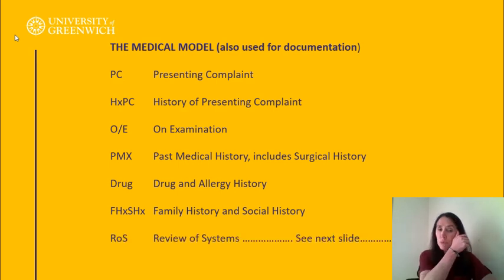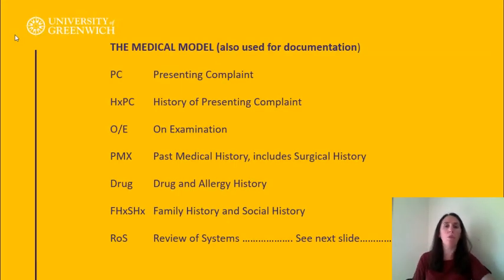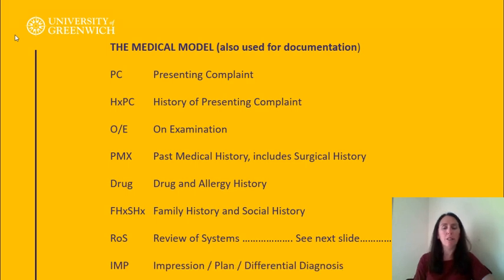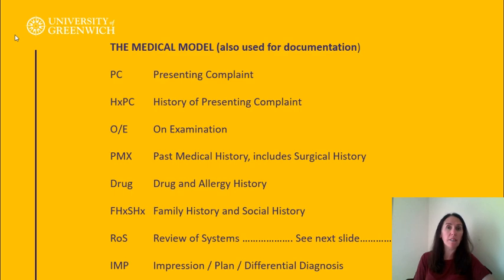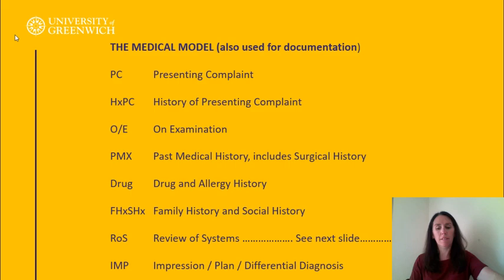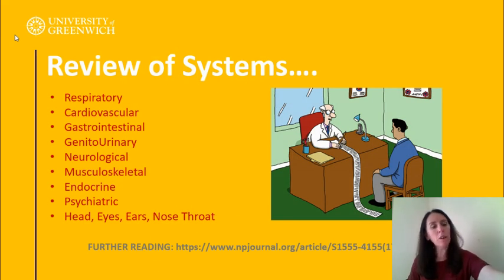Review of systems is basically code for everything else — this is what makes the medical model the most thorough. We'll come back to review of systems in more detail. The last thing is your impression, your plan, your differential diagnosis, or treatment. This might be: the patient is suffering from a pulled muscle, advise going to hospital for an X-ray and ECG to rule out anything sinister.